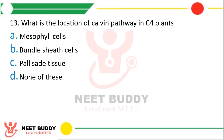Question 13. What is the location of the Calvin pathway in C4 plants — mesophyll cells, bundle sheath cells, palisade tissue, or none of these? The correct answer is option B, that is bundle sheath cells.